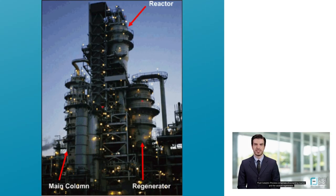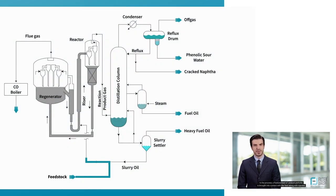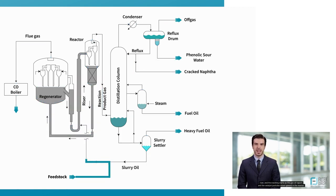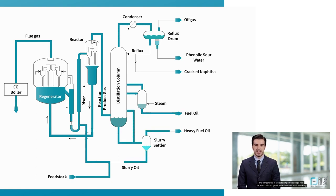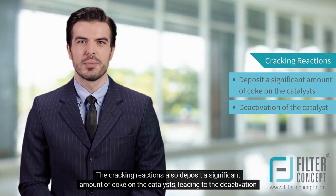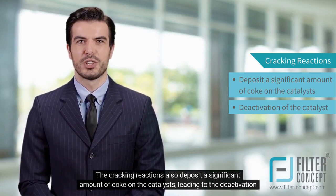The fluid catalytic process comprises of a cracking reactor and the catalyst regenerator. In the process, a fluidized bed of catalyst particles is brought into contact with the feed along with injected steam at the entrance of the reactor known as the riser. The hot catalyst particles coming from the regenerator unit evaporate the feed gas oil upon contact in the riser, and the cracking starts as the gas oil vapors and the catalyst particles move upward in the reactor. The temperature of the catalyst particles drops with the evaporation of gas oil while the endothermic cracking reactions proceed during the upward movement.